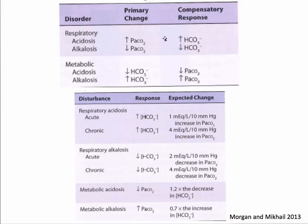Looking at disorders of acid-base: respiratory disorders can be either acidosis or alkalosis. In respiratory acidosis, CO2 is up and over time bicarbonate goes up to compensate. In respiratory alkalosis — a hyperventilating patient — CO2 goes down and bicarbonate will go down in a compensatory response. In metabolic acidosis, bicarbonate is low and PCO2 goes down in a compensatory response. With excess bicarbonate — metabolic alkalosis — PCO2 will rise in response. The disturbance response and expected changes are shown in the bottom graphic.